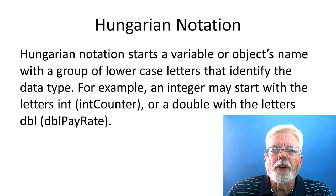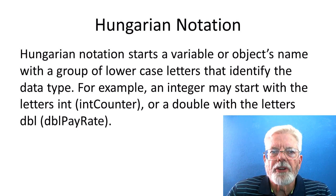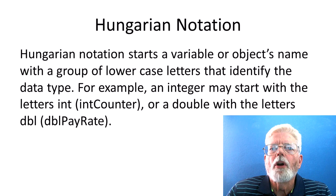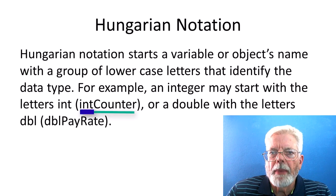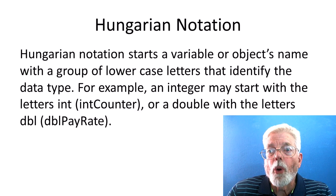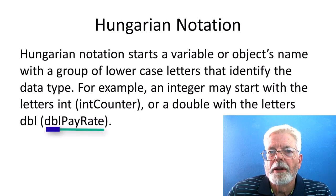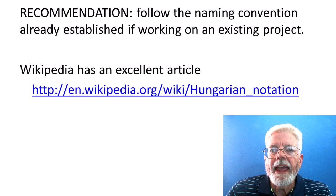Hungarian notation starts a variable or object's name with a group of lowercase letters that identify the data type. For example, an integer might start with the letters INT or a double with the letters DBL. Double pay rate. There are advantages and disadvantages of Hungarian notation.